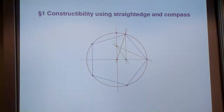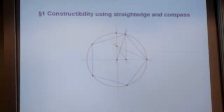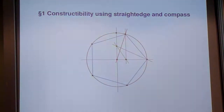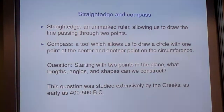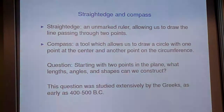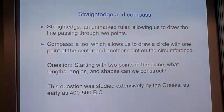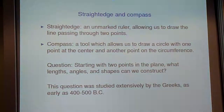First, I want to talk about constructability — constructability using straight edge and compass. A straight edge is just an unmarked ruler; it's something that allows you to draw a straight line connecting two points. You don't assume it has any thickness. It only has one edge. As soon as you lift it off the paper, it disappears. It's just something that lets you draw a line through two points.